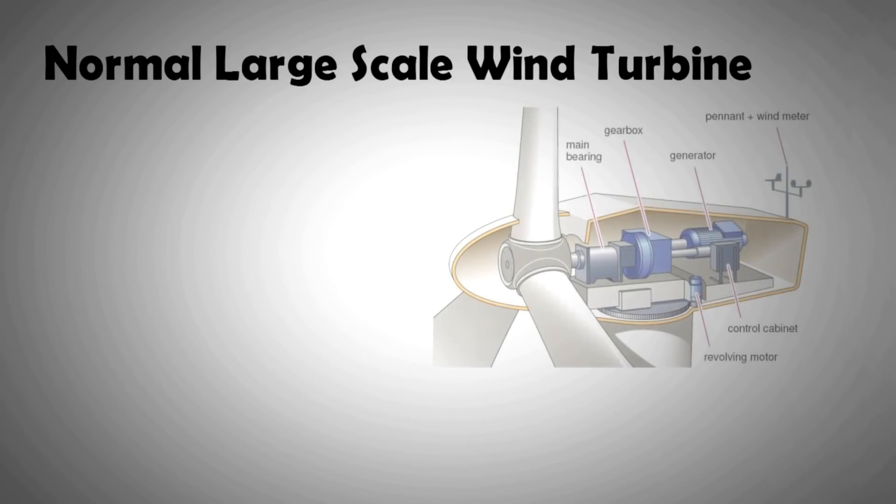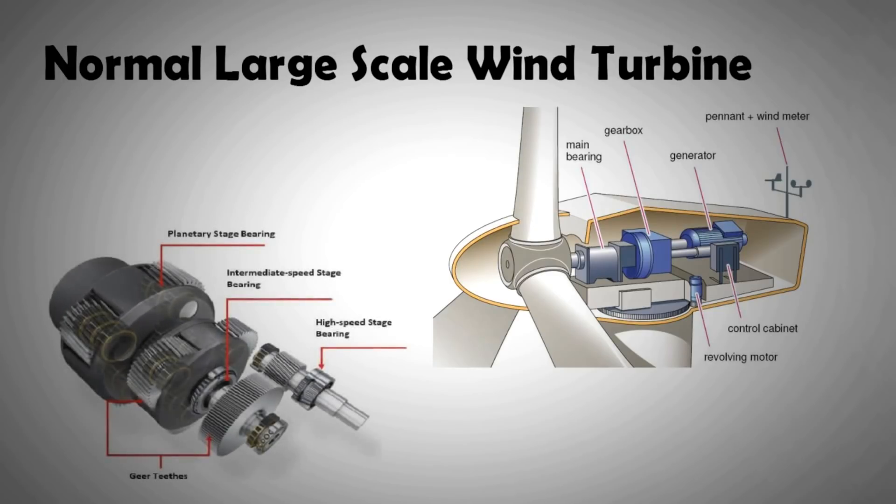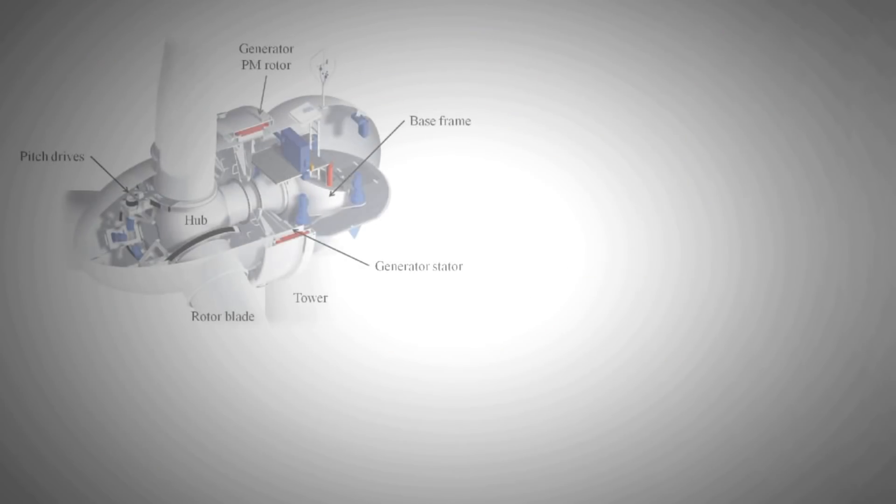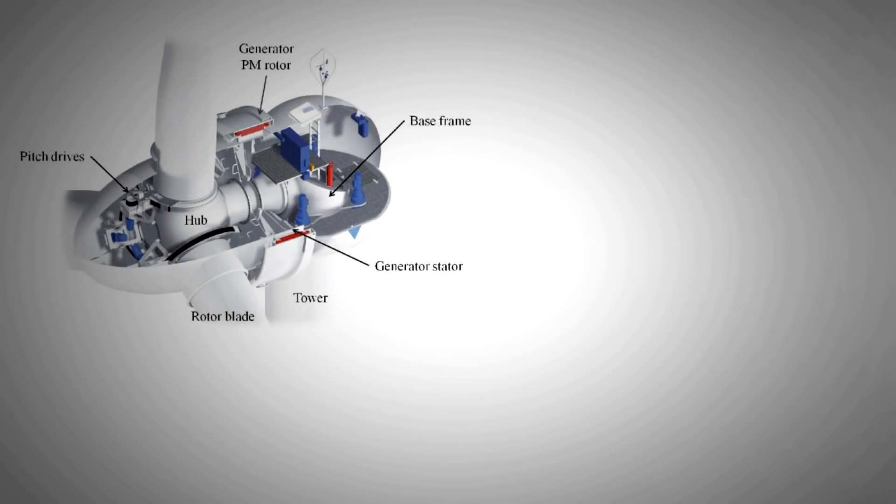In a normal large-scale turbine, complex mechanical system is at work. For increasing the speed of the rotor in the generator, a sophisticated gearing system is used. In a direct drive, the complexity of that system is taken out by electrical and power electronic systems.